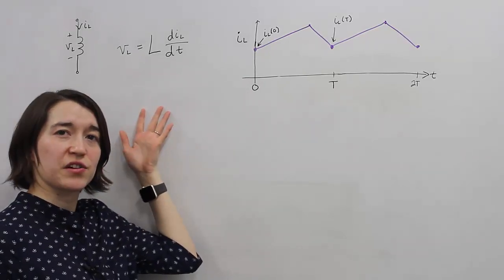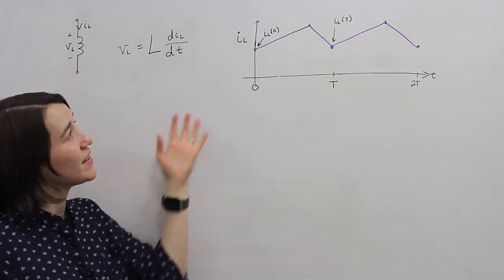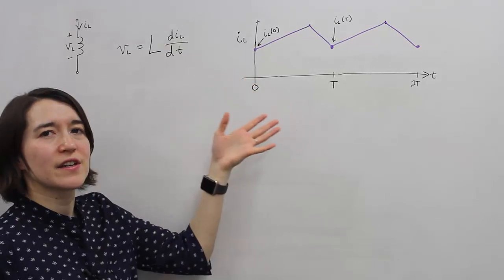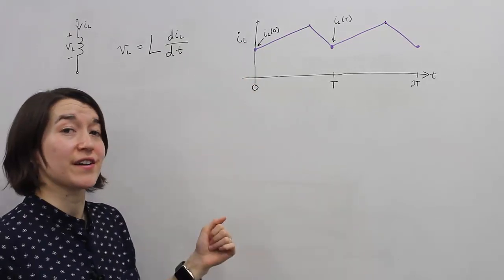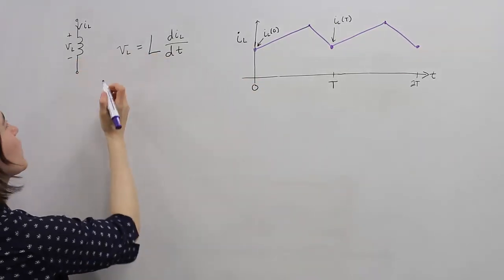We'll start from the basic inductor equation and make a generalization about the average voltage over an inductor. So start here, move the dt over, and I'm going to take the integral of both sides.